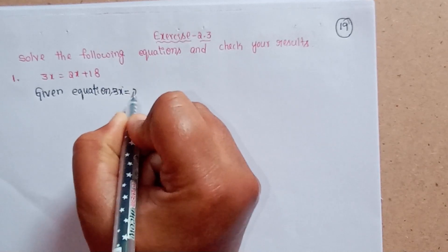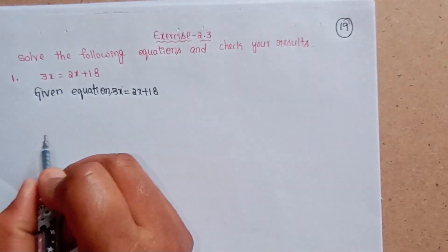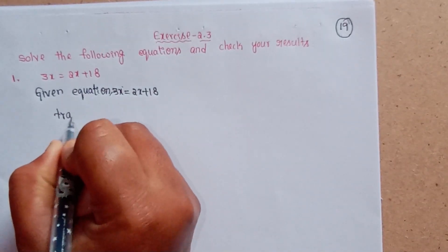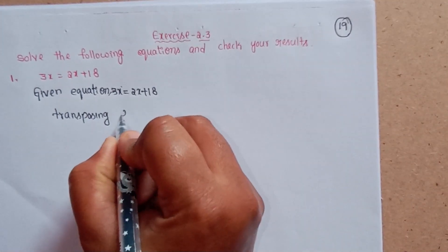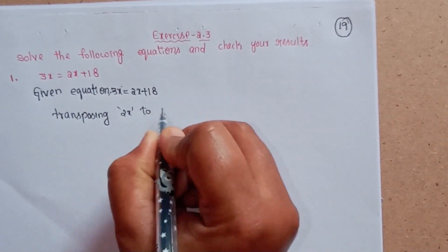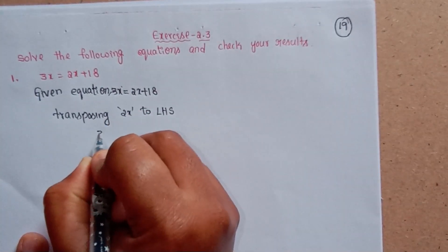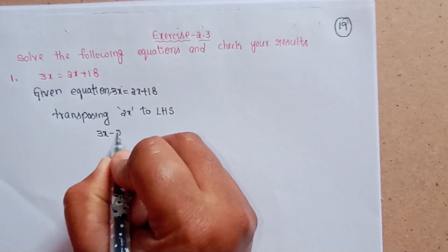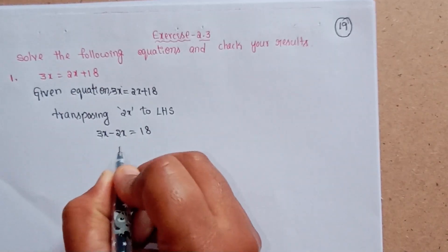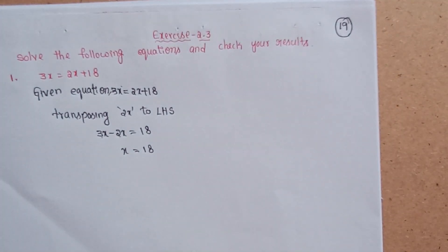Transpose 2x to the left-hand side. So 3x minus 2x equals 18, which gives x equal to 18.